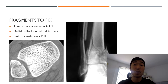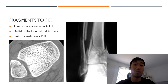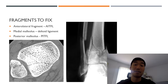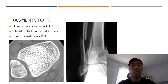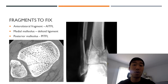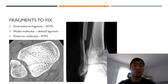Before we get into the actual surgical approaches for pylons, there are a couple of fragments I want to go over. There are generally three types of fragments seen in pylon trauma cases: the anterolateral fragment, which is often attached to the AITFL; the medial malleolus, which is attached to the deltoid ligament; and the posterior malleolus, which is attached to the PITFL. Understanding which fragments are present on the radiograph also tells us which ligaments are involved.